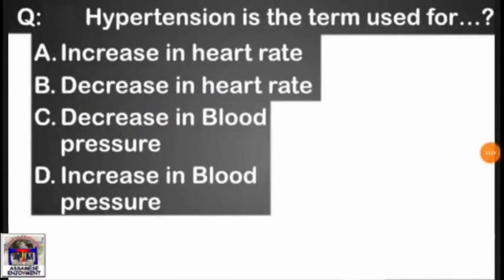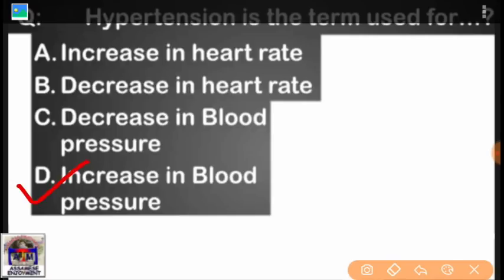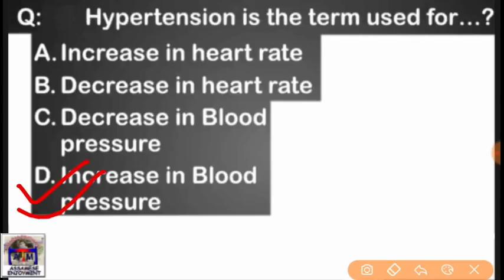Hypertension is the term used for high blood pressure. Number two: increase in heart rate. Option C: decrease in heart rate. Option D: increase in blood pressure. The answer is option D — increase in blood pressure. Blood pressure: my blood pressure.